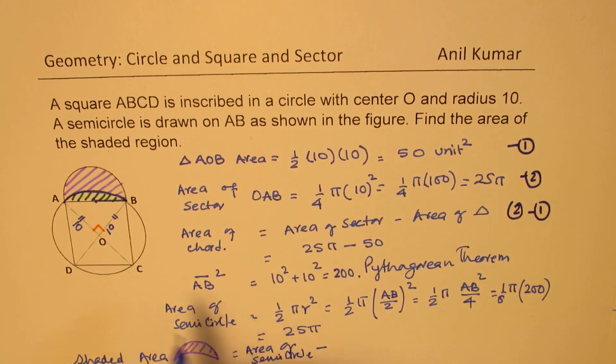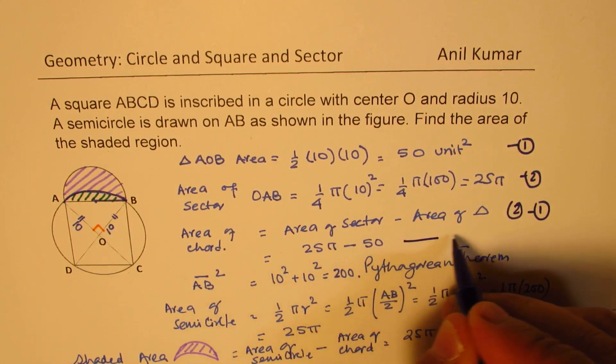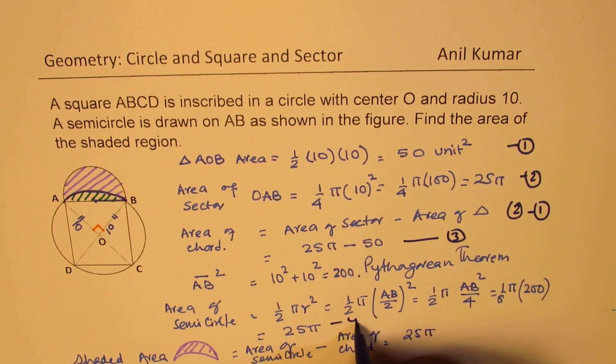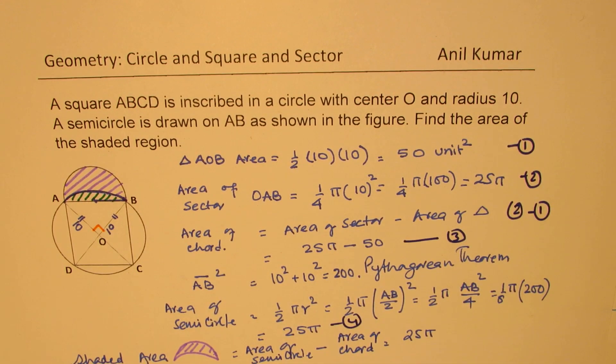So that area is area of semicircle take away area of chord. So area of semicircle is 25π, which we'll call equation number 3. We'll call this as 4. So we are basically doing 4 minus 3, correct? Which is 4 minus 3.